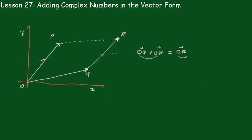Right. Now, but we know that this QR is equivalent to OP. So, we're going to say that OQ plus OP equals OR. And that's a very important result.